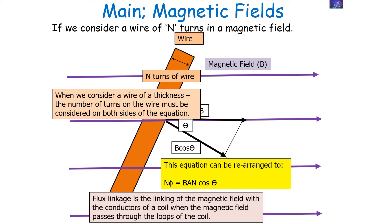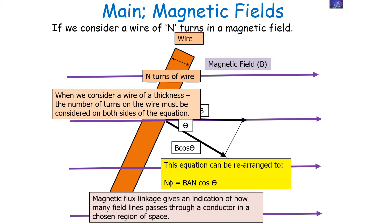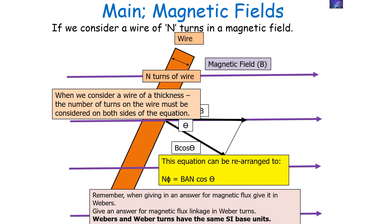Flux linkage is important as it's the linking of the magnetic field with the conductors of a coil when the magnetic field passes through the loops of the coil — it links together the magnetic field and the conductor which is in the magnetic field. The magnetic flux linkage is the product of the magnetic flux and the number of turns on a coil through which a field will pass. Even though turns of wire is a dimensionless quantity, we call the units of flux linkage Weber-turns to differentiate between magnetic flux and magnetic flux linkage. When giving an answer for magnetic flux, give it in Webers; when giving an answer for magnetic flux linkage, give it in Weber-turns, even though they have the same SI base units.